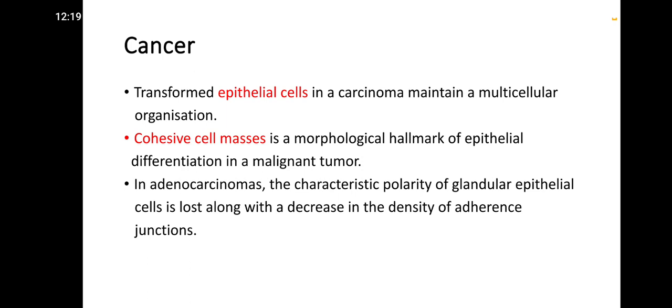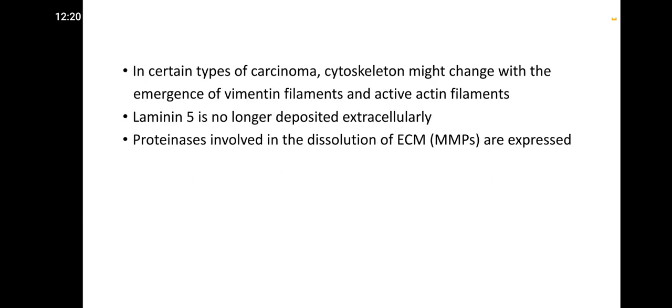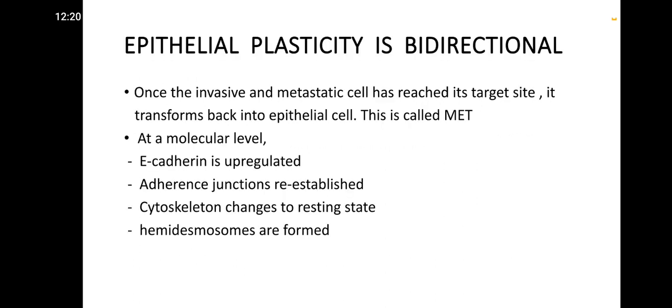In carcinomas, transformed epithelial cells maintain multicellular organization and form cohesive cell masses, a morphological hallmark of epithelial differentiation. In malignant tumors, the characteristic polarity of glandular epithelial cells is lost, along with a decrease in the density of adherens junctions. Cytoskeletal changes occur with emergence of vimentin and active actin filaments. Laminin-5 is no longer deposited extracellularly, and matrix metalloproteases involved in dissolution of the extracellular matrix are expressed.